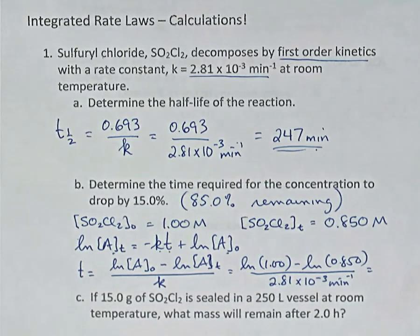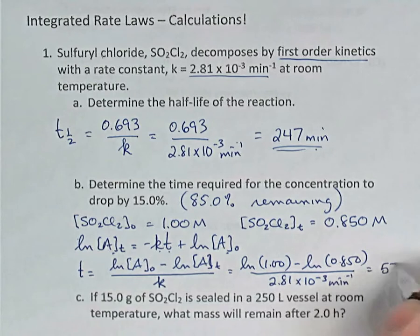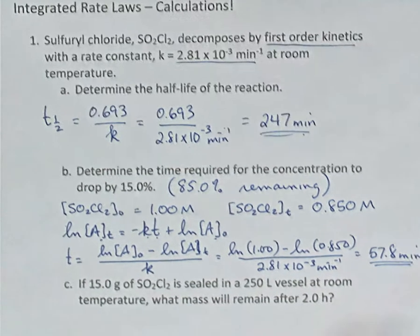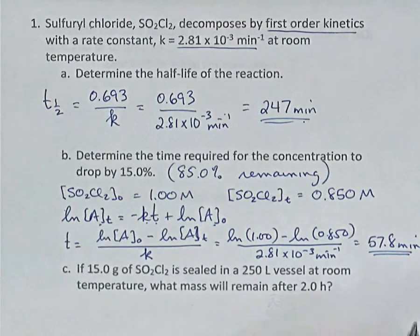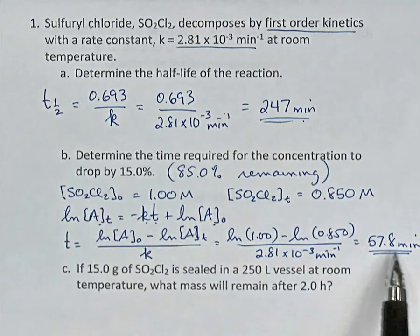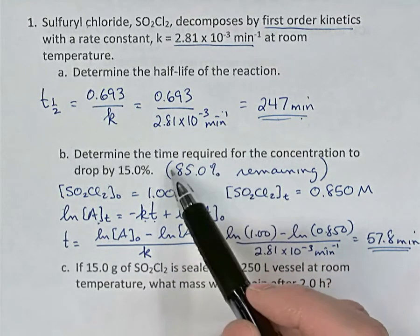On the calculator: natural log of 1 minus natural log of 0.85, then divide by 2.81 × 10⁻³, gives 57.8 minutes. That makes sense because dropping by half would require 247 minutes, so dropping by only 15% requires much less — 57.8 minutes.